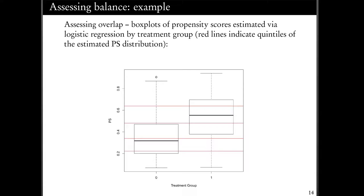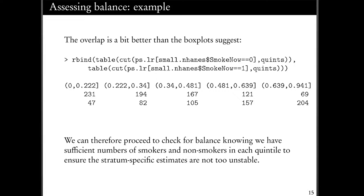I can look at the distribution of the propensity score and compare it among non-smokers and smokers using side-by-side box plots. I'll then overlay the quintiles of my propensity score distribution on these box plots. This tells me whether, if I want to do a stratified analysis, I probably have enough overlap in each quintile to do so. Looking at the numbers, in my lowest quintile I have only 47 smokers, but that is the stratum with the smallest number in any cell. So I feel pretty good about doing a simple analysis in that stratified sample.